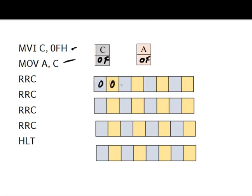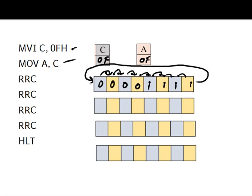Before doing the RRC operation, we write 0F in binary: 0 is four zeros and F is four ones. With RRC, the data of register A shifts one bit towards the right — the rightmost bit transfers to the leftmost position. After the first RRC, we get 10000111. After the second RRC, we get 11000011.